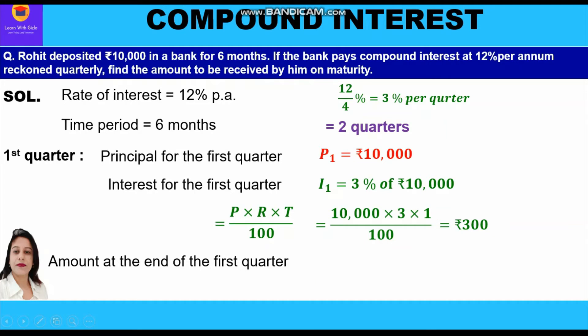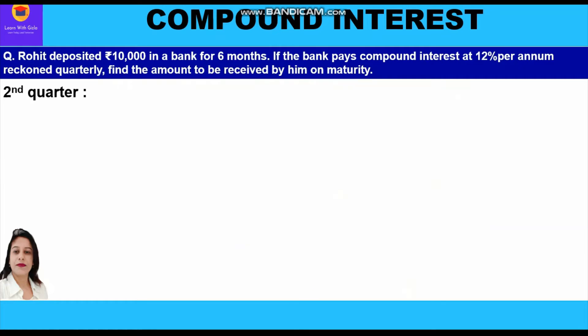The amount at the end of the first quarter is the sum of the principal and the interest of the first quarter. So we add 10,000 plus 300 to get rupees 10,300 as the amount at the end of the first quarter. This amount will now become the principal for the second quarter.